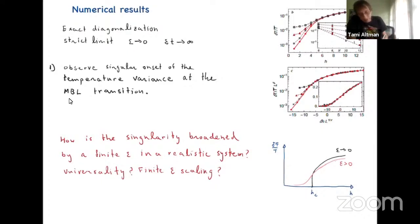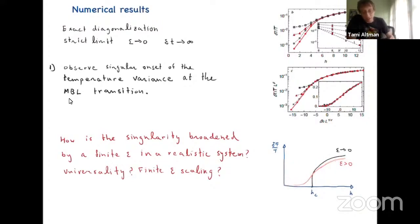The idealized picture is: we're calculating with exact diagonalization in the strict epsilon-to-zero limit and we expect to see a sharp transition where this variance goes to zero. In reality, we'll always have some finite epsilon, even with an infinite system, and that will broaden the transition. Because any realistic system will always have finite epsilon, maybe the most interesting thing to understand is what happens to this sharp transition in the presence of finite epsilon.